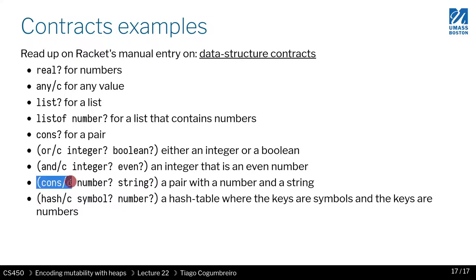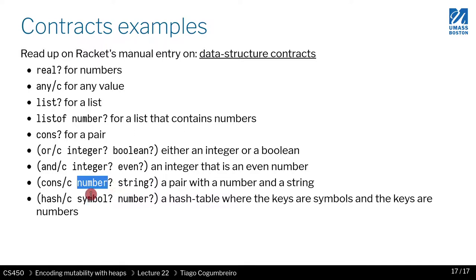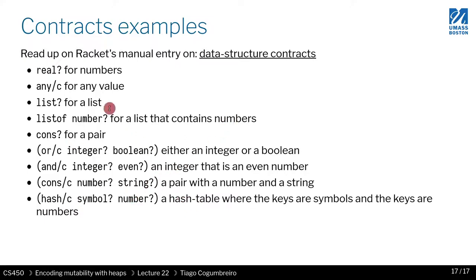You can also specify that something is a pair where one side is a number and the other is a string — and it could be nested, with another pair inside and so on. There's also a combinator for hash tables where you can specify the key type and the value type. I'm showing you this because in homework five I include contracts in the main functions, because it makes debugging much simpler.